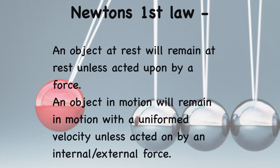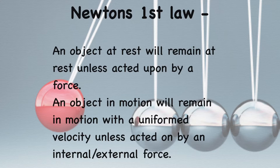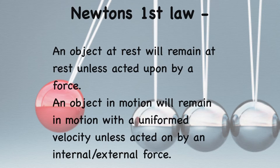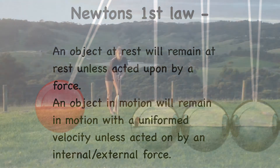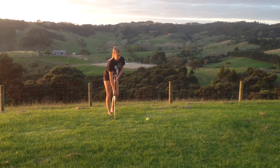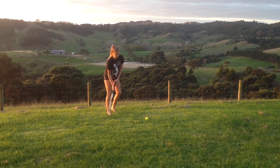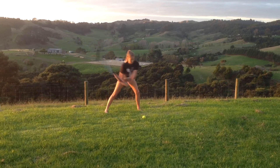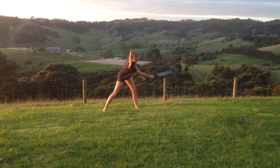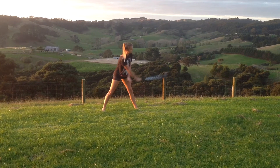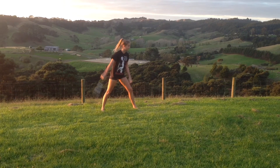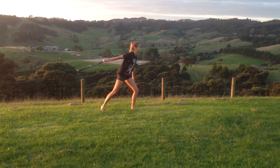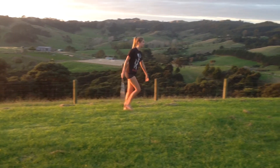Newton's first law. An object at rest will remain at rest unless acted upon by a force. An object in motion will remain in motion with a uniform velocity unless acted upon by an internal or external force. In hockey, you use Newton's first law when hitting or trapping the ball. When you hit the ball, you are applying a force to the ball which is at rest. When you trap the ball, you are stopping the ball from being in motion until you begin to dribble or pass it on.